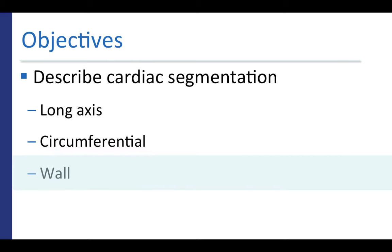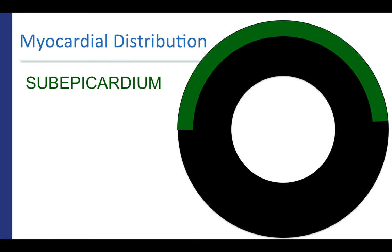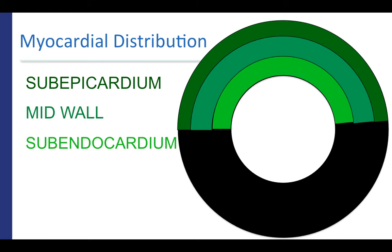Finally, we'll describe segmentation along the myocardial wall thickness. The myocardial wall can be approximately divided into thirds, corresponding to the subepicardium, which is located just below the epicardial surface, the mid wall, and the subendocardium, located below the endocardial surface.